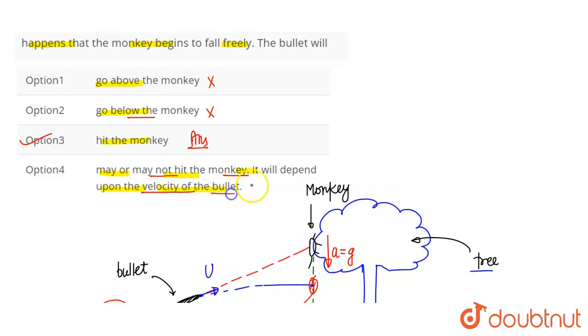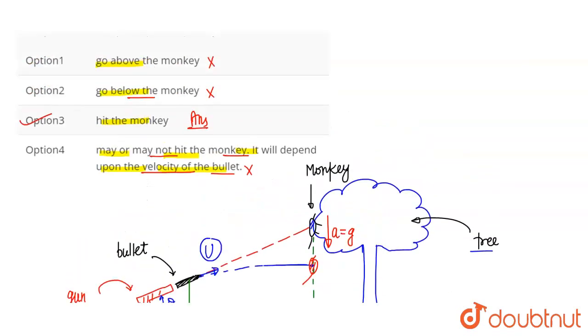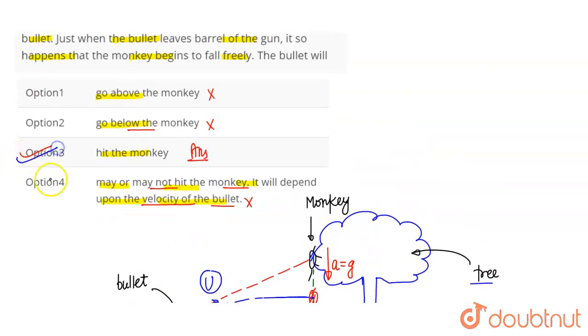Hit the monkey is absolutely correct. This bullet will hit the monkey in this case when the monkey is in free fall, because the bullet's downward direction acceleration is the same. So both are going down with the same acceleration, which means both will hit each other. Option 4 says may or may not hit the monkey, it will depend upon the velocity of the bullet. This is wrong. They will hit and it depends on the fact that both have the same acceleration, not on velocity. Answer is option number 3. Thank you.